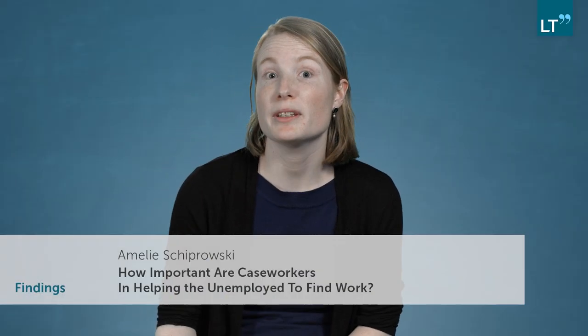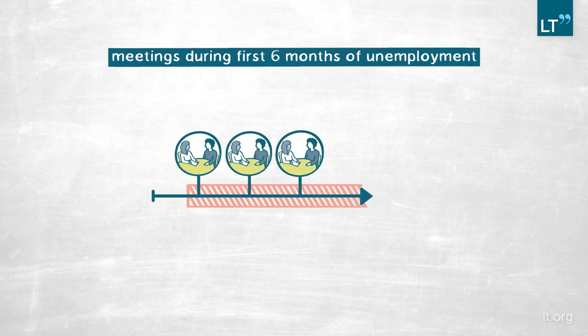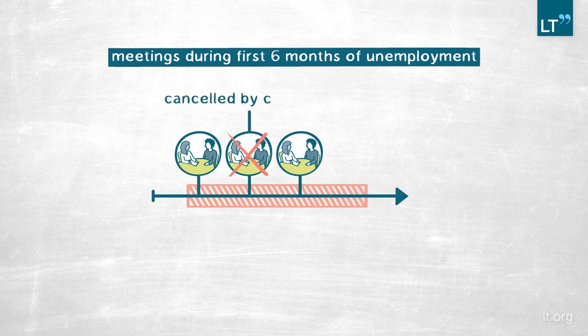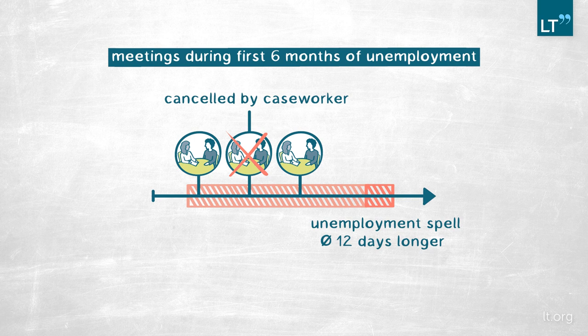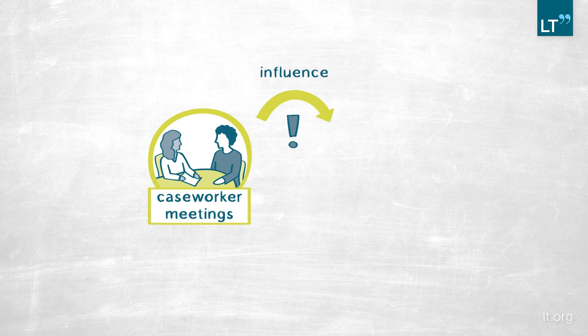The first question was how much does a caseworker meeting on average affect the duration of unemployment spells. In my data, the average job seeker has about three meetings during the first six months of unemployment. What I find is that when one of these three meetings is lost due to a caseworker absence, the unemployment spell gets 12 days longer on average — an effect of about 5%. Clearly, these caseworker meetings do matter for the duration of unemployment.